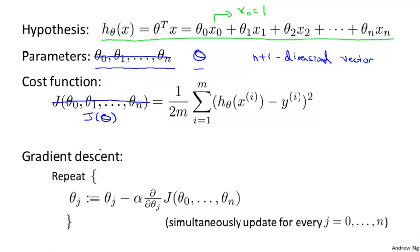Here's what gradient descent looks like. We're going to repeatedly update each parameter theta j according to theta j minus alpha times this derivative term. So theta j is updated as theta j minus the learning rate alpha times the partial derivative of the cost function with respect to the parameter theta j.